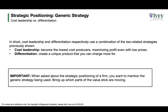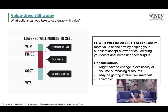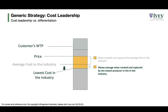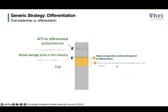When asked about strategic positioning on the exam, state which generic strategy you're using, then for extra points bring up which parts of the value stick you want to move. For cost leadership, by offering the lowest cost in the industry you can capture a larger margin since your costs are lower while pricing similarly. For differentiation, if you can price higher while maintaining comparable costs, you still increase your margin and capture above-average value.